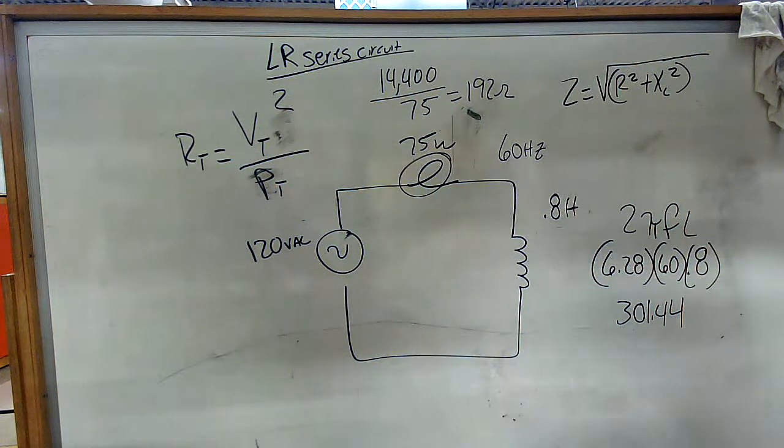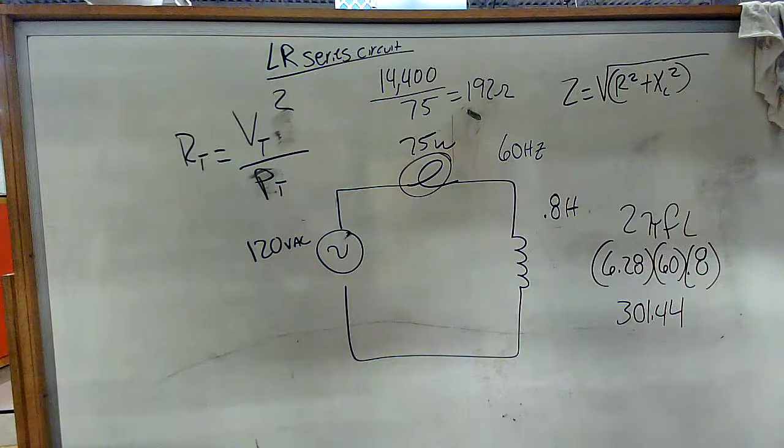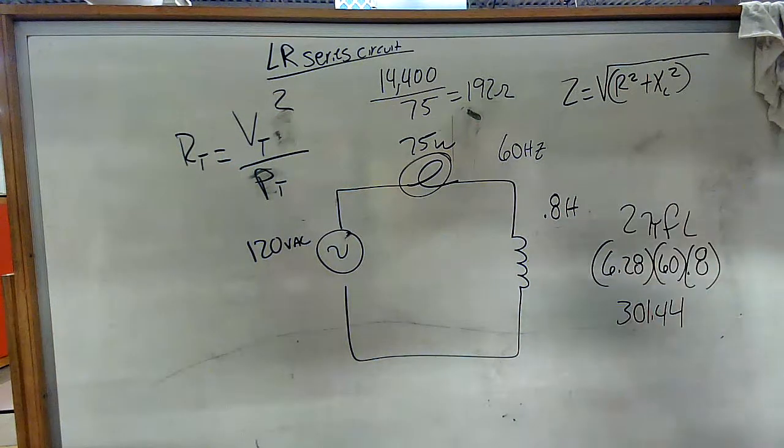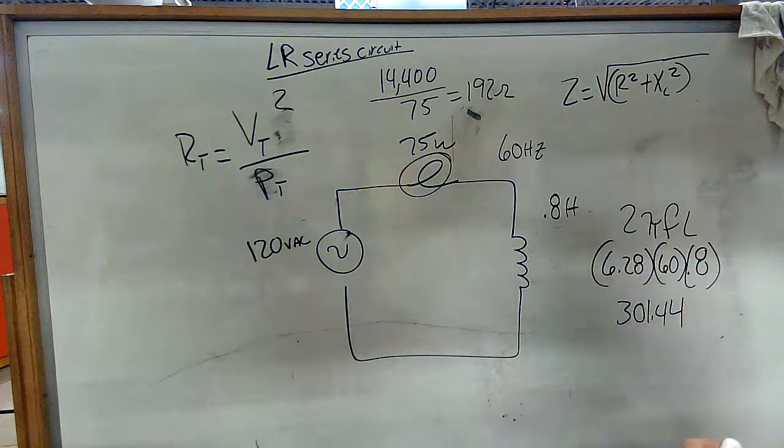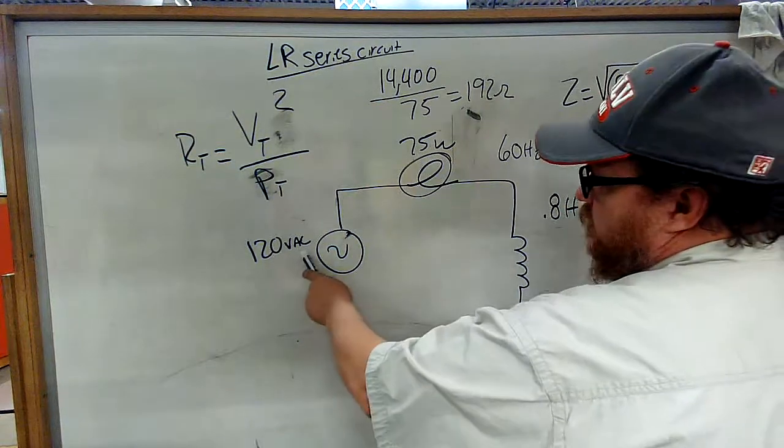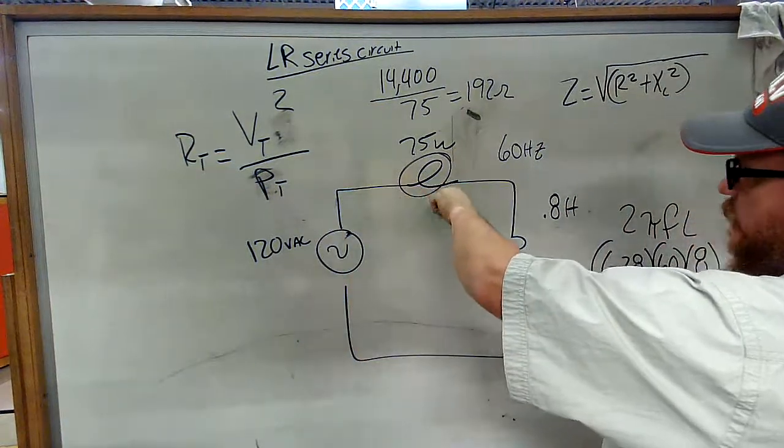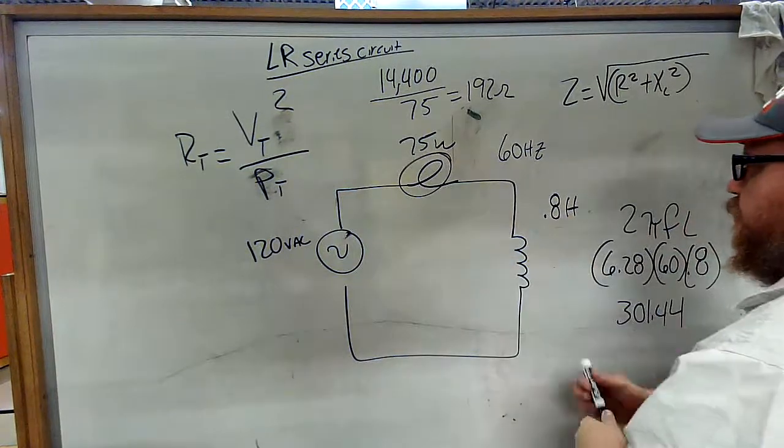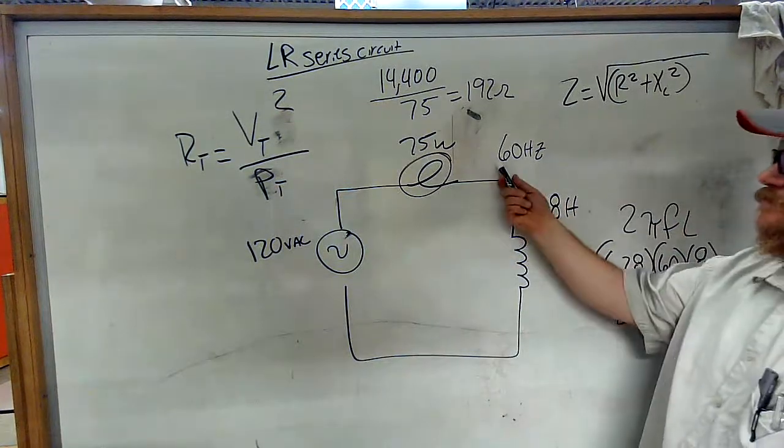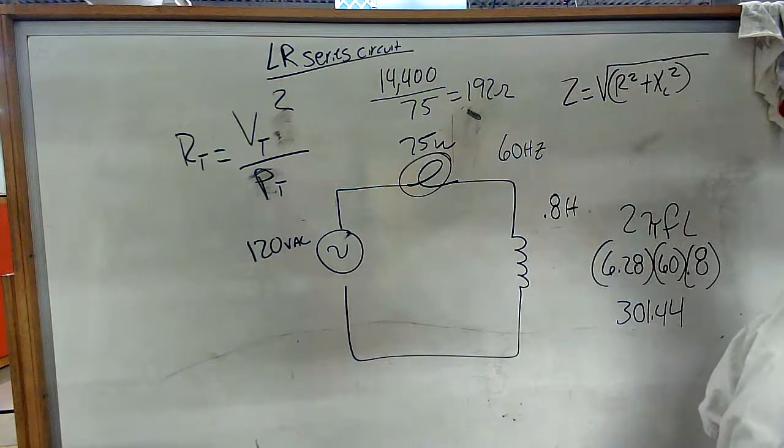Okay, so there are some questions on how to do an RL circuit or an LR series circuit. In this case we're given 120 volts AC, 75 watt lamp, a 0.8 Henry inductor, 60 Hertz in the United States. We're running 60 Hertz.